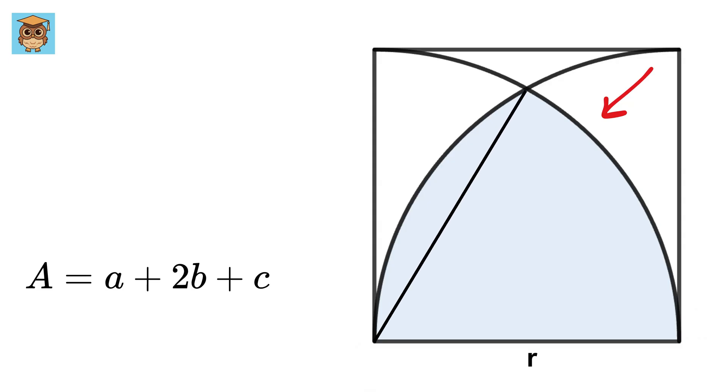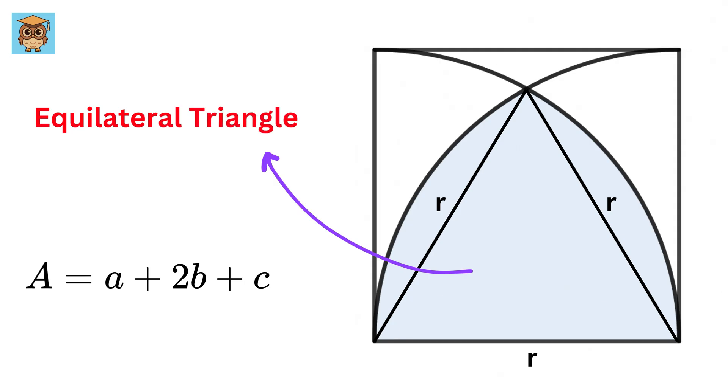Therefore, this piece, which is also the radius of this quarter circle, will be R, and this piece, which is the radius of this quarter circle, will also be R. So this is an equilateral triangle, and thus both these angles will be 60 degrees.